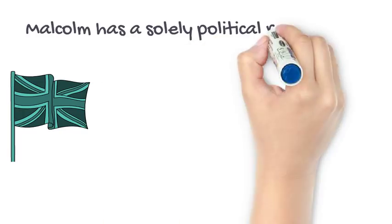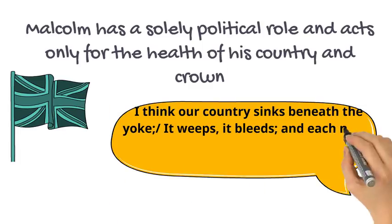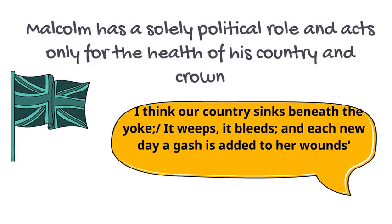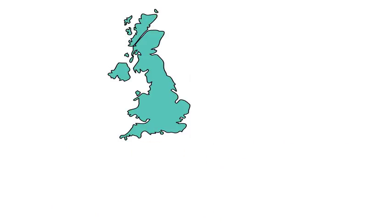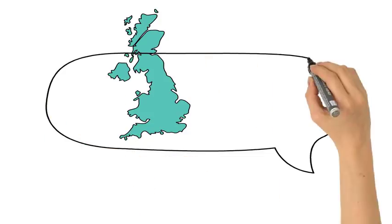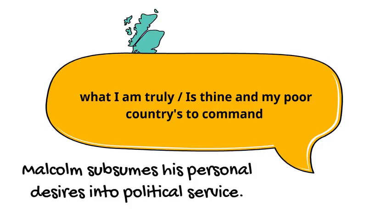We further see Malcolm embodying royalty in his lack of personal identity. Unlike Macbeth, who is driven by personal ambition, Malcolm has a solely political role and acts only for the health of his country and the crown. Whilst Macbeth suffers mental pain and anguish, Malcolm uses the popular medieval metaphor of the body politic and focuses only on the health of the country. Furthermore, whilst Macbeth is driven by ambition, through the sacrificial statement 'what I am truly is that I am in my poor country's to command,' Malcolm subsumes his personal desires into political service.